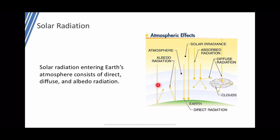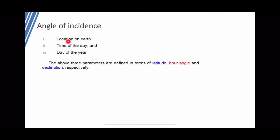Albedo radiation is reflected and deflected back into the sky, and can also be reflected by greenhouse gases like carbon dioxide back onto the earth — it is radiation that bounces back and forth between the sun's energy and the earth's surface. To study solar incidence we need three parameters: latitude (location on earth), hour angle (time of day), and declination (day of the year).